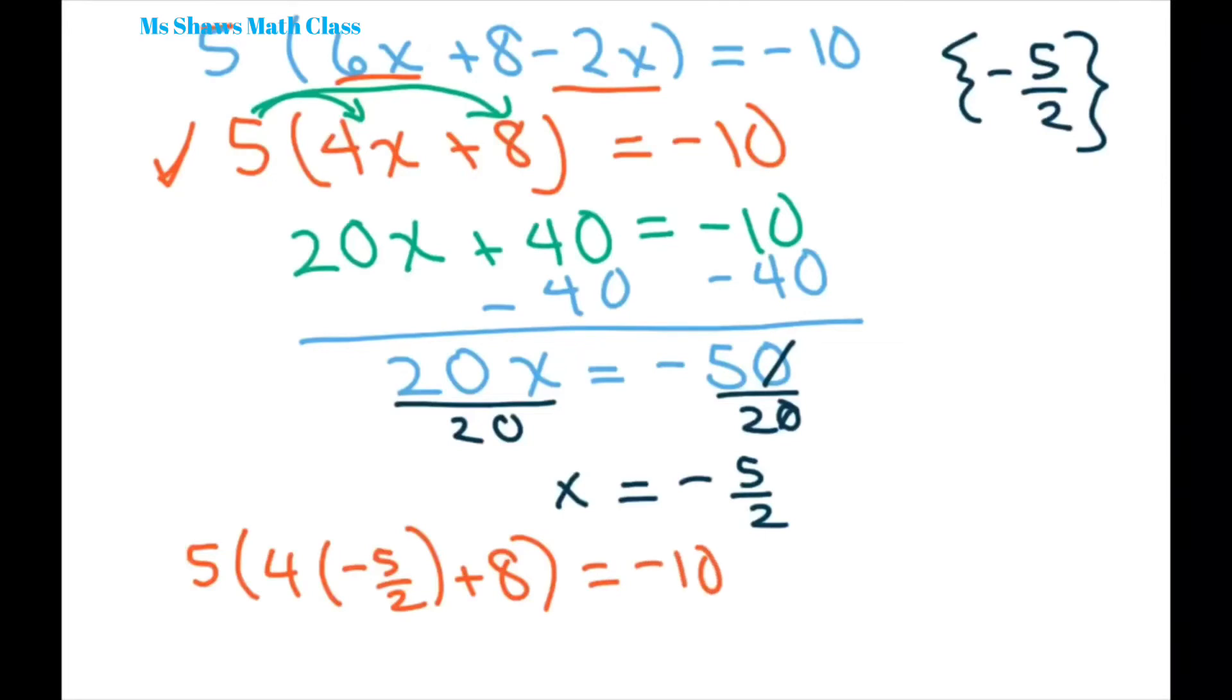So the first thing you want to do is you notice that two goes into four two times. So then you just multiply two times negative five. So you get five times negative 10 plus eight. Does that equal negative 10?